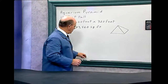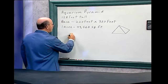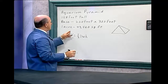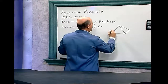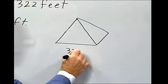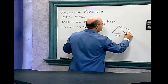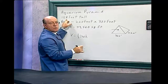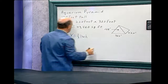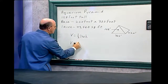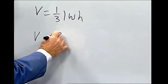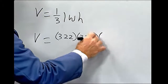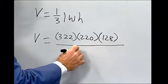Let's figure out the volume. The volume of this pyramid equals one-third times the length times the width times the height. The length is 322 feet, the width is 220 feet, and the height is 128 feet. So the volume equals 322 times 220 times 128, divided by 3.